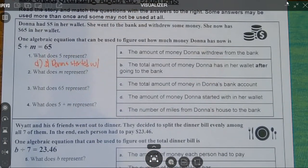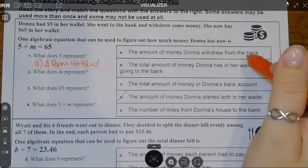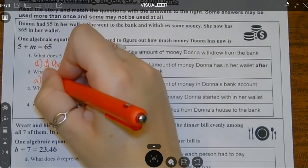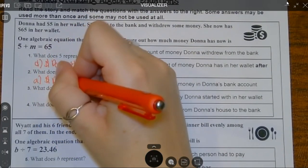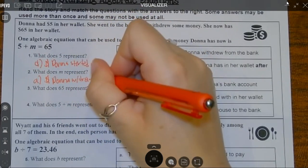The next thing it's asking is what does m represent? The amount of money she withdrew from the bank? Yeah, that's what it is. We don't know how much she took out. So m is the money Donna withdrew from the bank.